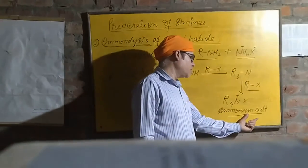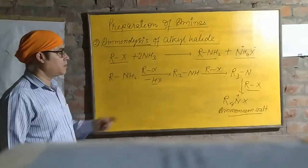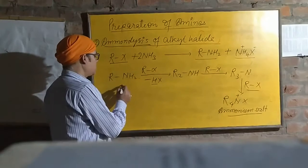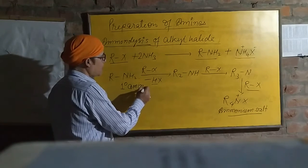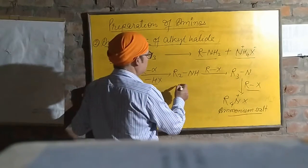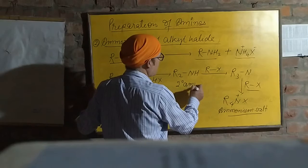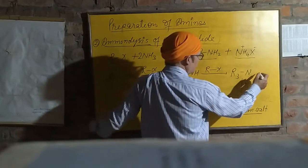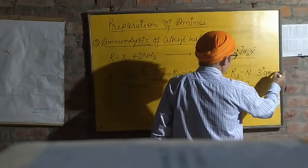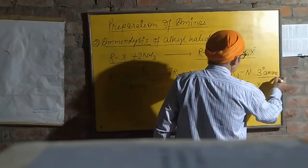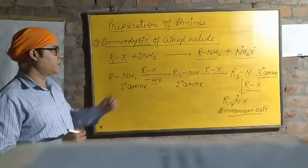In the last, we get ammonium salt. This way, with the help of aminolysis, we can prepare different types of amines. This one is the primary amine. Next, in the next step, we get secondary amine. And here we get tertiary amine. This reaction will be continued till the presence of hydrogen.